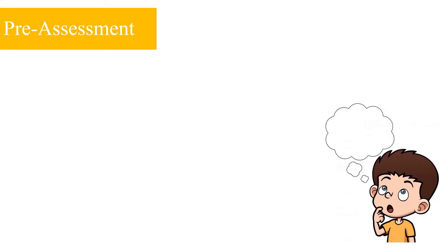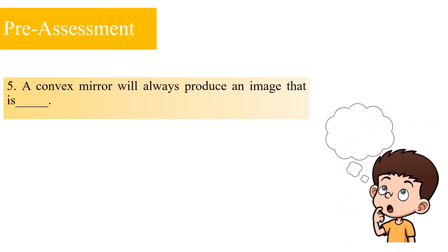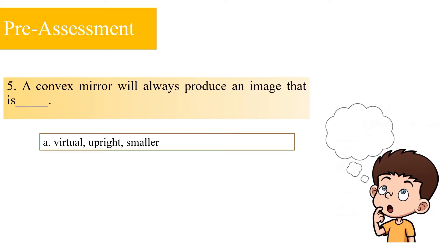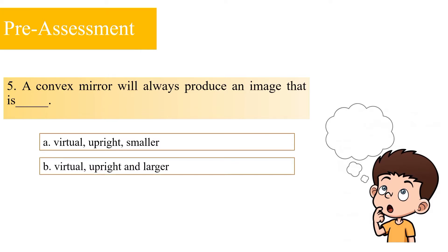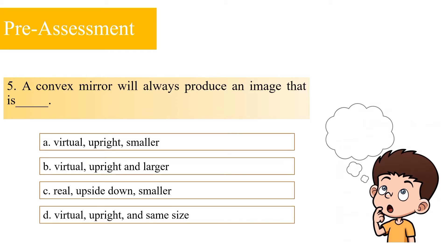For the 5th and last question: A convex mirror will always produce an image that is — A: virtual, upright, and smaller; B: virtual, upright, and larger; C: real, upside down, and smaller; or D: virtual, upright, and same size. The correct answer is letter A — it's virtual, upright, and smaller.